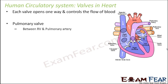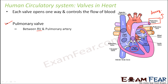The first valve is the pulmonary valve. It is present between the right ventricle and the pulmonary artery. The pulmonary artery carries deoxygenated blood — normally arteries carry oxygenated blood, but this is the only exception. So between the right ventricle and the pulmonary artery you have this valve — the white colored flap structure — called the pulmonary valve. When it opens, it gives space for blood to flow from the right ventricle to the pulmonary artery.